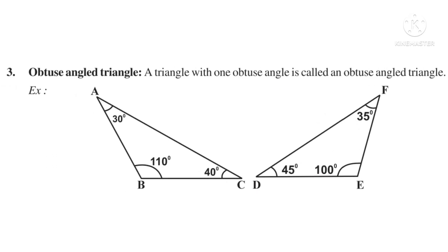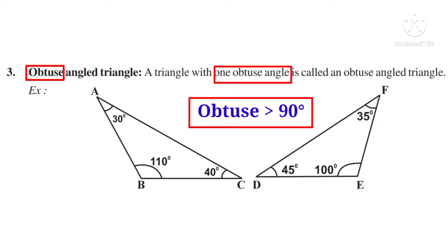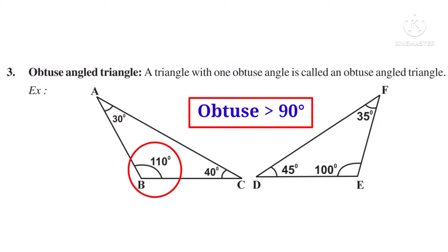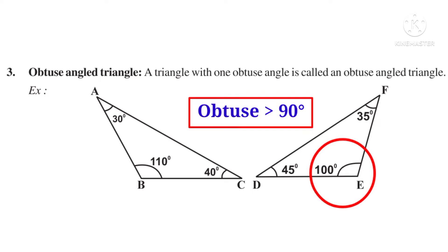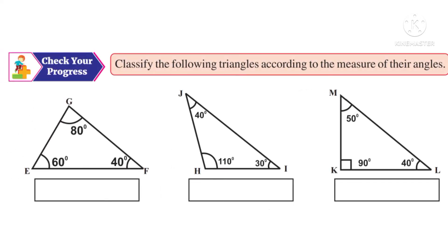Number 3: Obtuse Angled Triangle. Observe — obtuse means an angle which is greater than 90 degrees. If a triangle has one obtuse angle, then it is called an obtuse angled triangle. For example, in triangle ABC, angle B is 110°, which is greater than 90° — one obtuse angle — so triangle ABC is an obtuse angled triangle. In triangle DEF, angle E = 100°, which is greater than 90° — so triangle DEF is also an obtuse angled triangle.